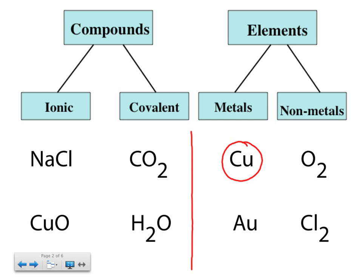You can look in the periodic table and see that it is a metal. Whereas this formula over here, O2, is also an element — it's actually a molecule as well, we'll get to that in another video. But it is also an element because it only has oxygen. The little 2 means that there are two oxygen atoms bonded together, but there's only one type of element in here, so it's classified as an element.